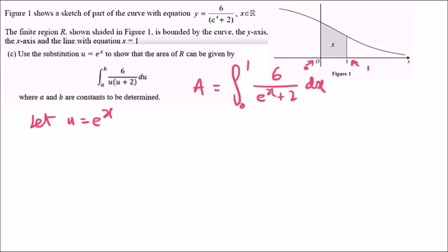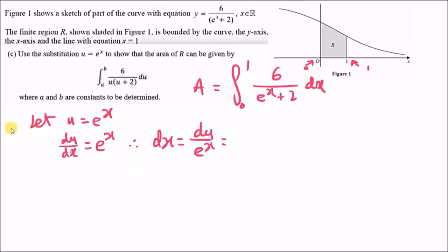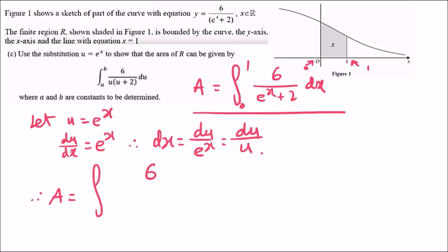Differentiating: du over dx equals e to the x, so dx equals du over e to the x equals du over u. The limits change: when x equals 0, u equals e to the 0 equals 1; when x equals 1, u equals e. The integral becomes the integral from 1 to e of 6 over (u plus 2) times du over u.